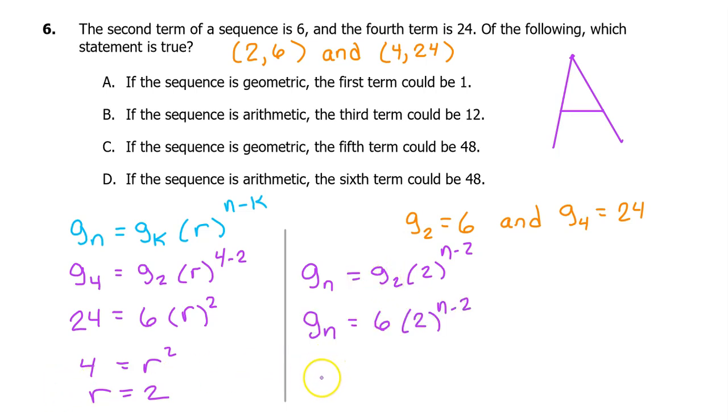Now let's see if G_1 is going to equal 1. G_1 would equal 6 times 2 to the (1 minus 2) power. So G_1 would equal 6 times 2 to the negative 1 power. 2 to the negative 1 power is 1/2. So G_1 would equal 6 times 1/2, which equals 3, not 1. So A is not the answer.